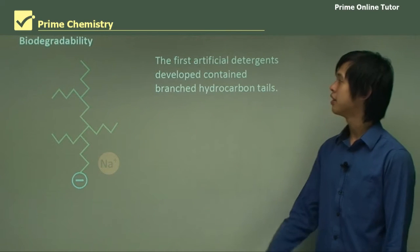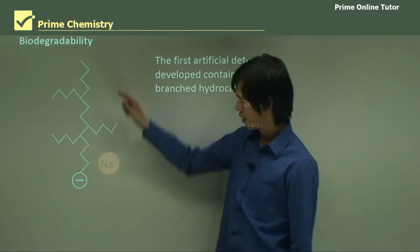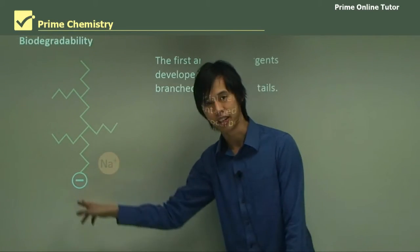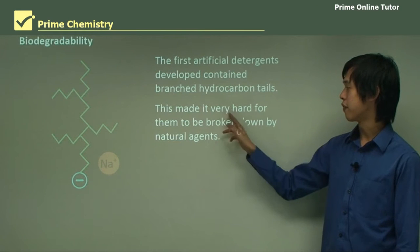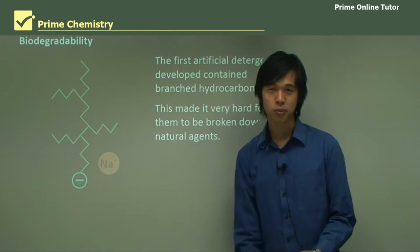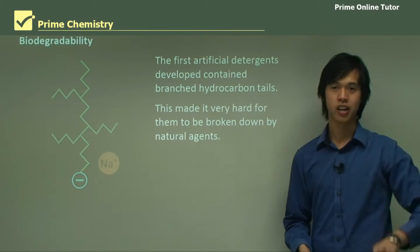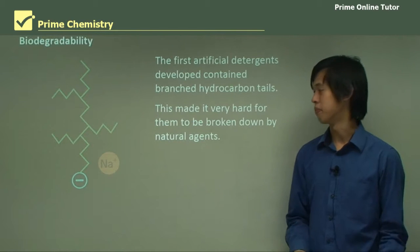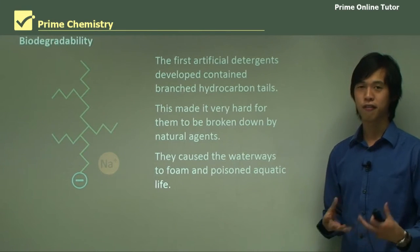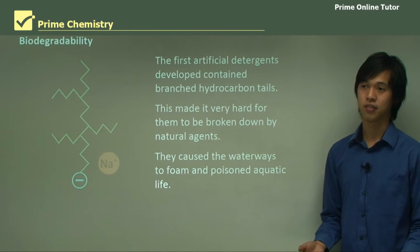Biodegradability is another issue. The first artificial detergents developed contained branched hydrocarbon tails — the chain has lots of branches going in all sorts of different directions off the main chain. This made them very hard to be broken down by natural agents. These branched chains are much more difficult to break down naturally compared to a straight-chain molecule. They cause waterways to foam and poison aquatic life — sometimes you see pictures of foaming waterways, which can be caused by these anionic detergents with branched structures.